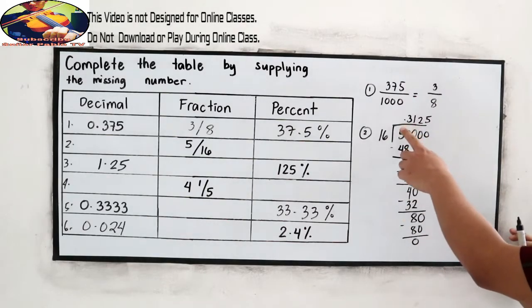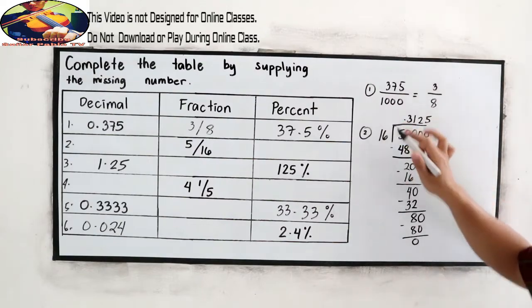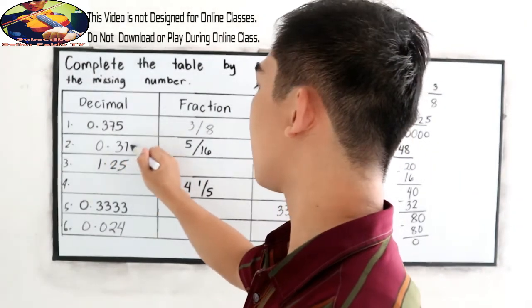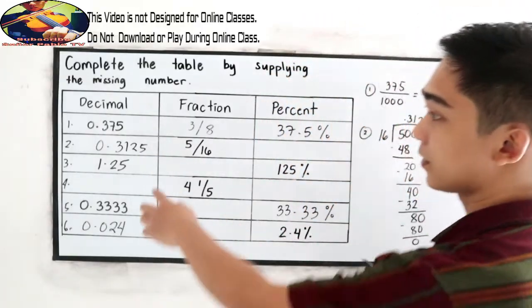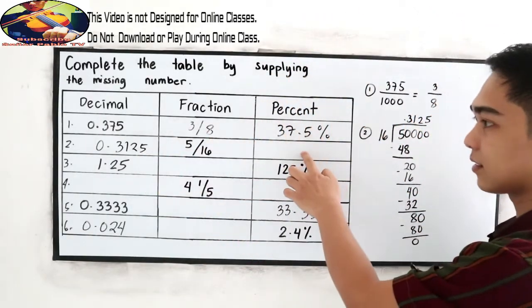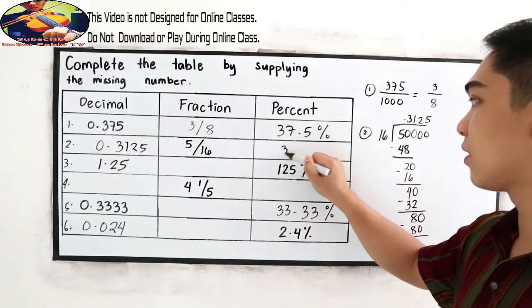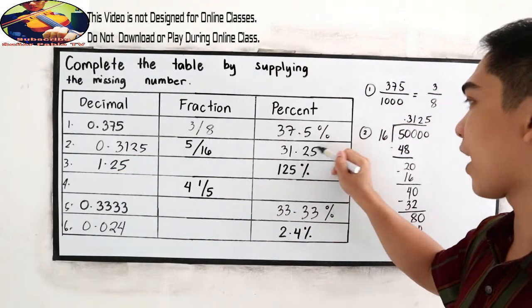So this decimal equivalent is 0.3125. Now write into percent. Move two decimal going right. So that is 31.25%.